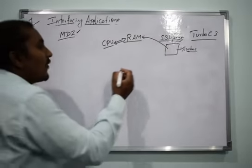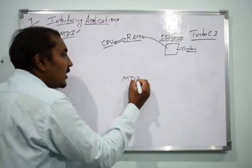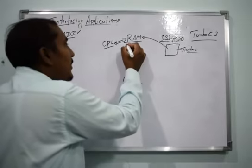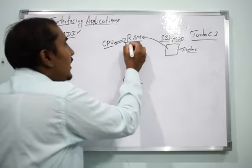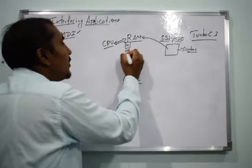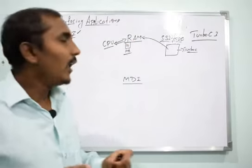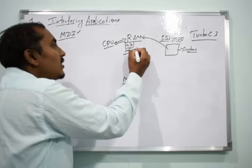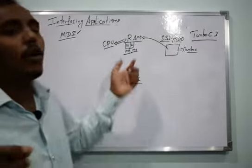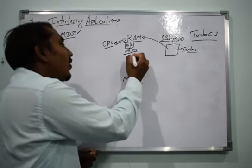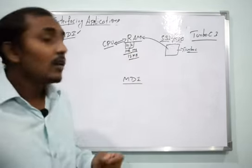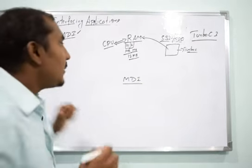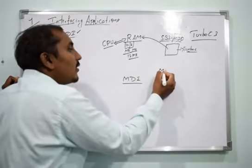Now with Multiple Document Interface: suppose Turbo C uses 10 MB of RAM. If I open three files of 2 MB each, total memory used is 12 MB. So within 12 MB of space, I can open two or three documents simultaneously under the same application.